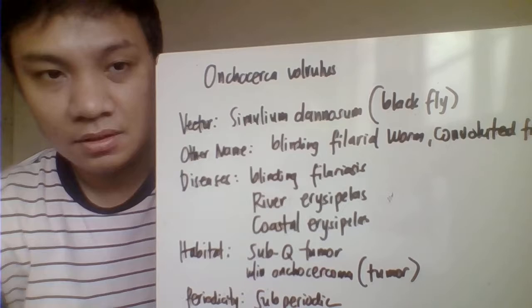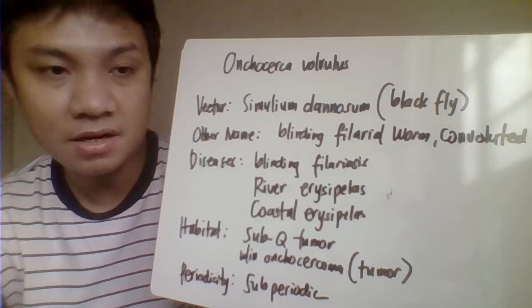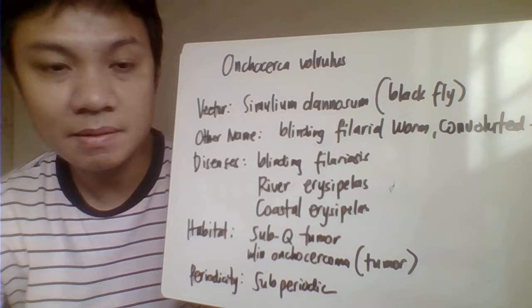The next one we have here is Onchocerca volvulus. The other name for that one — this is your blinding filarial worms, also called convoluted filarial worms. It tries to cause blinding filariasis, also called river erysipelas, and we also have coastal erysipelas.